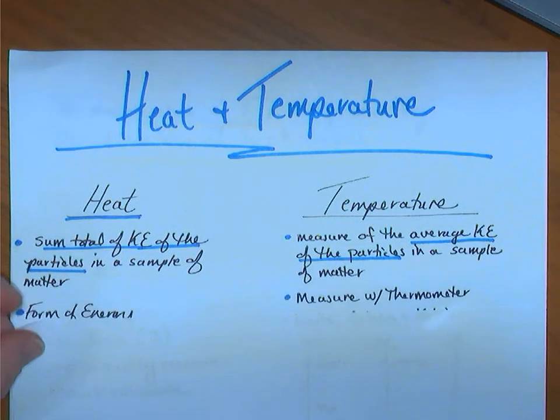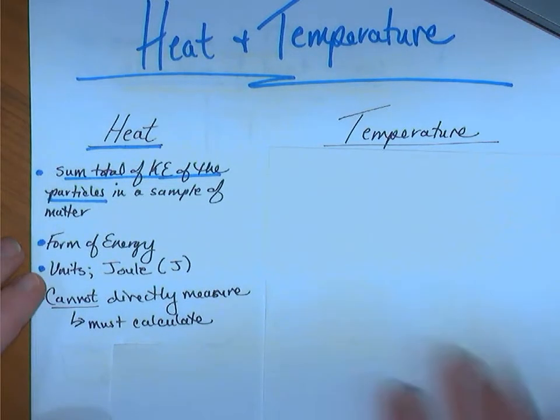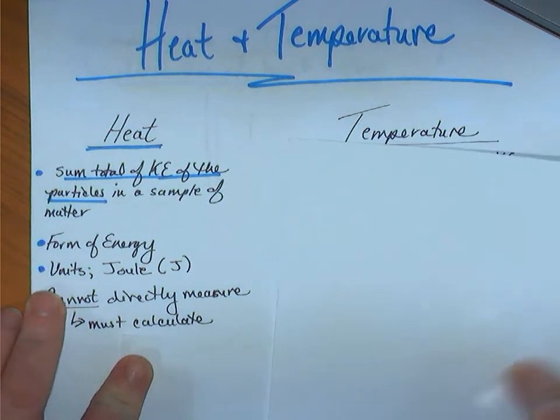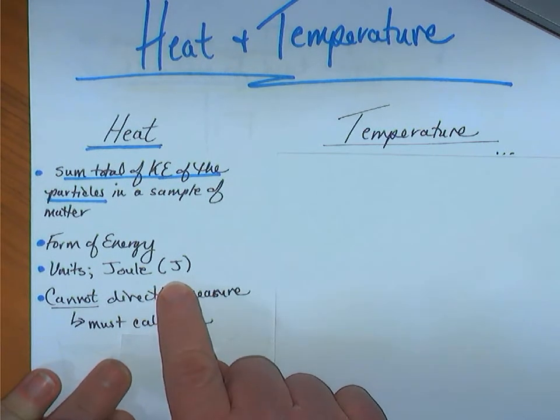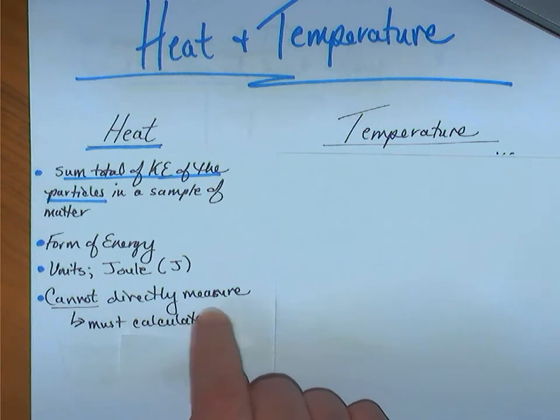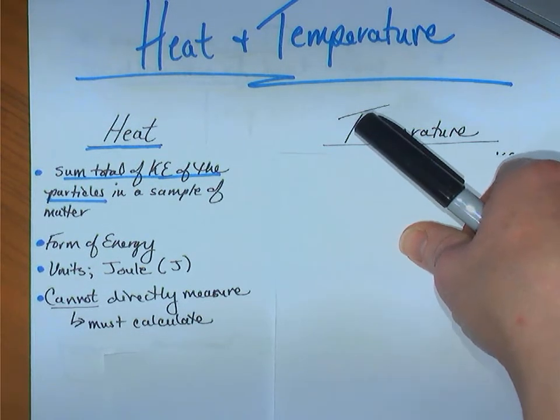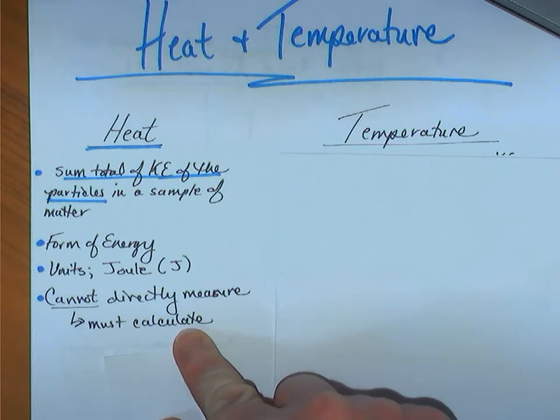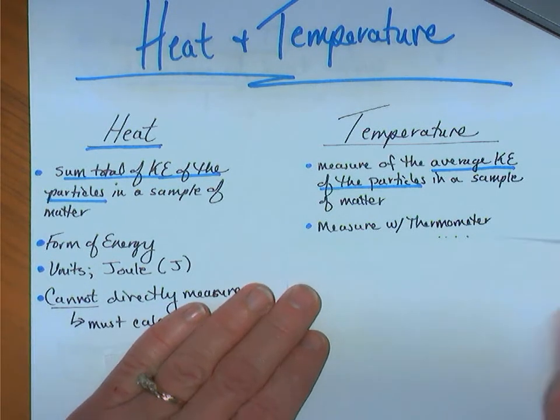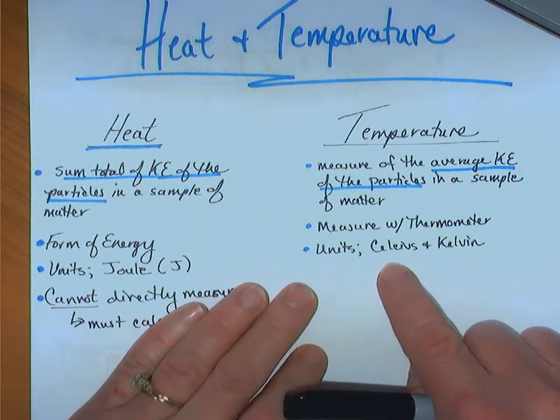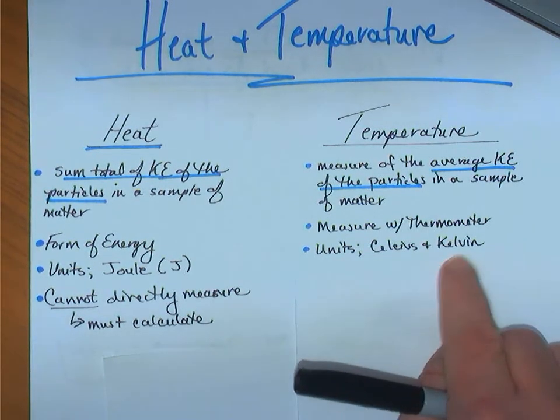Now, heat is a form of energy. Being a form of energy, we would communicate the units in joules, which we usually represent with a capital J. You cannot directly measure heat. We indirectly find out its value by calculating it. Temperature is measured with a thermometer. Units in chemistry, we commonly use Celsius, but we will also rely on Kelvin a lot this year.